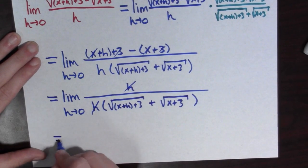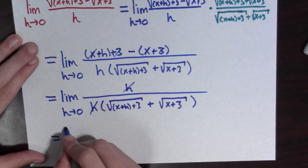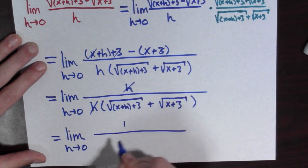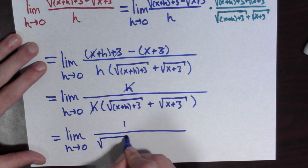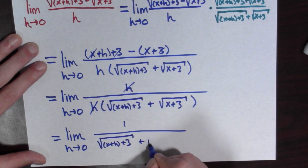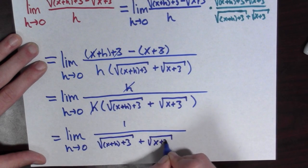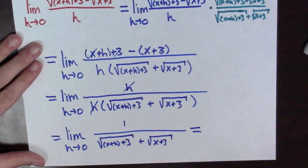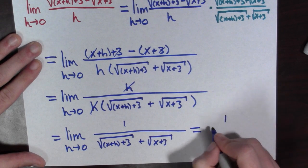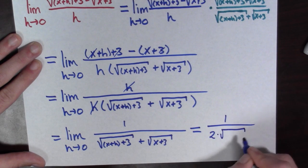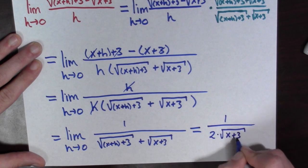Finally, we have the limit as h goes to 0 of 1 over the square root of x plus h plus 3, plus the square root of x plus 3. And since plugging in 0 for h does not make the denominator 0, we can simply plug in 0 for h. We get this is equal to 1 over 2 times the square root of x plus 3.